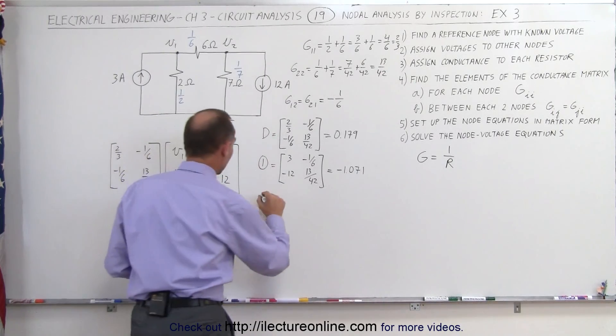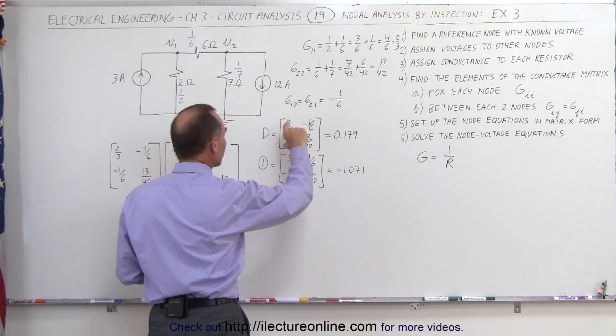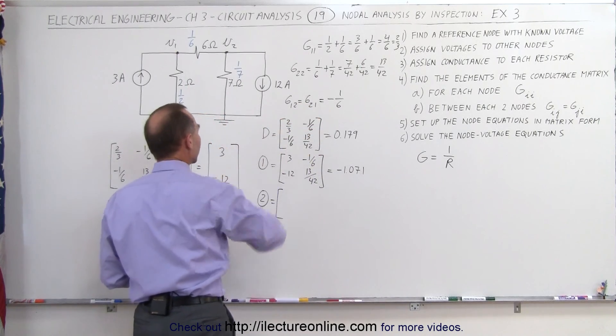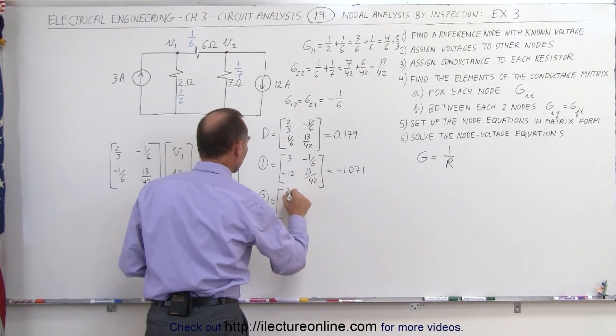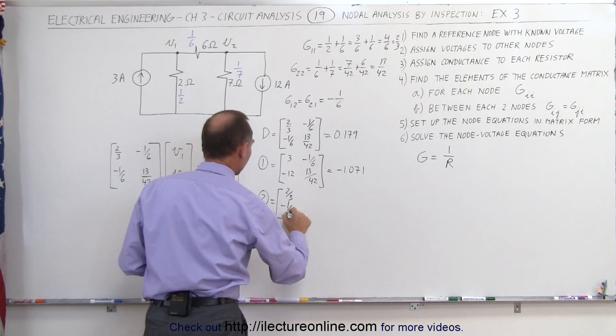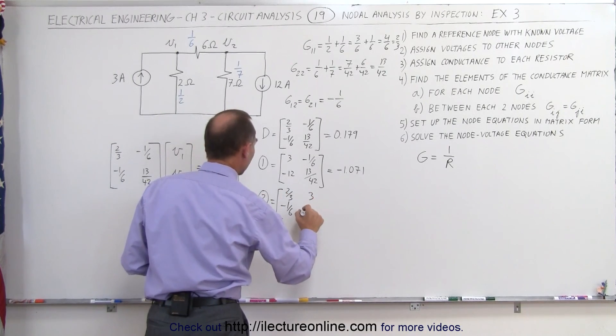Now for the second matrix, to find V2, we take the determinant matrix, replace the second column by the currents in the current matrix, 2 divided by 3, minus 1 over 6, then we write 3 and minus 12.